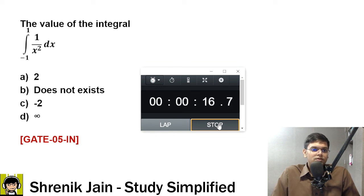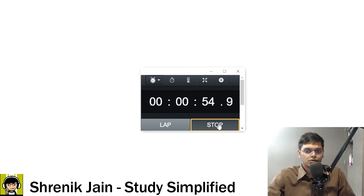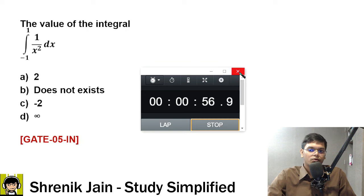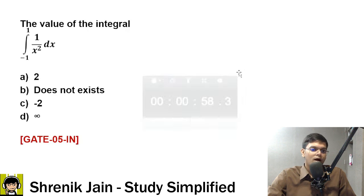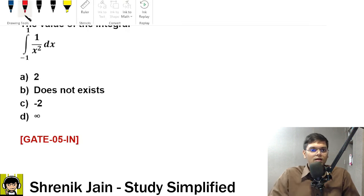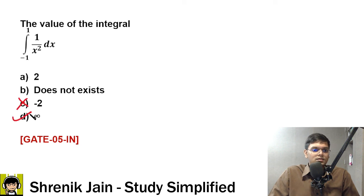This is one of the similar kind of questions. So 5, 4, 3, 2, 1. Very good! The wrong answer is c. The right answer is d. What? Yes, check it out, check it out.